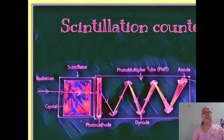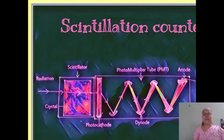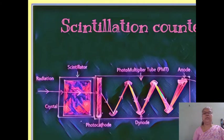The first method is the scintillation counter method and the second method is the GM counter — that is the Geiger-Muller counter. The scintillation counter is schematically represented in the diagram. In 1941, scientist H. Kalman designed the scintillation counter for the detection and measurement of alpha particles and beta particles, but not gamma particles.